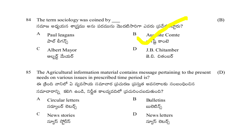Agricultural information material that contains messages pertaining to present needs on various issues, prescribed in a time period, is: circular letters, bulletins, news stories, or newsletters. The answer is newsletters.